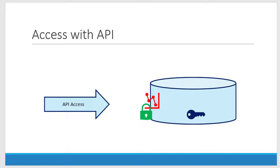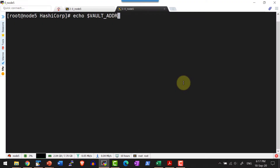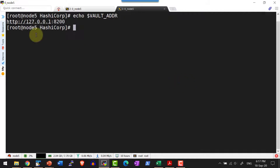For understanding purposes I am going to use the KV secret engine. Before getting started, let me check whether the environment variable VAULT_ADDR is set. I am going to echo the environment variable VAULT_ADDR — yes, it is set and it is pointing to localhost.